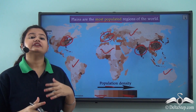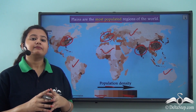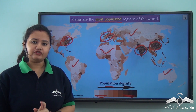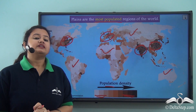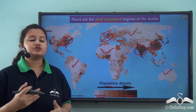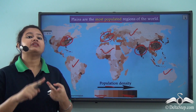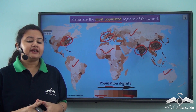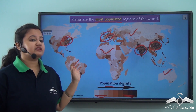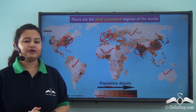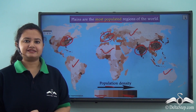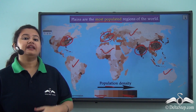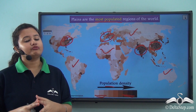To recap today's lesson: plains refer to an extensive area of flat land with lower elevation. We discussed various types of plains — alluvial plains, delta, flood plains, and coastal plains — and the importance of plains in human development, including agriculture, water supply, and transport. In our next lesson, we will discuss landforms and how they influence the lifestyle of people.